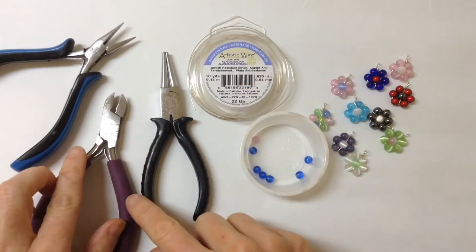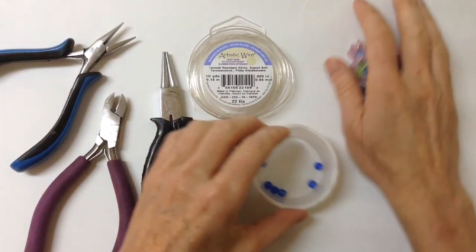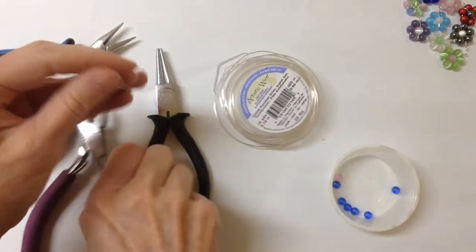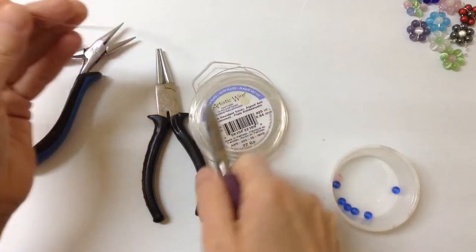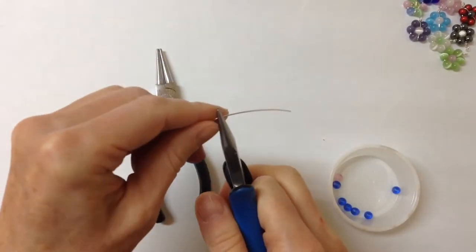You're going to need round pliers, cutters, and flat pliers. To get started, you're going to cut a piece of wire that's probably about 4 inches long, maybe 5 inches, and you're going to bend it at about an inch and a half like that on a right angle.